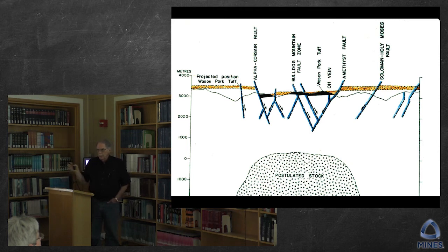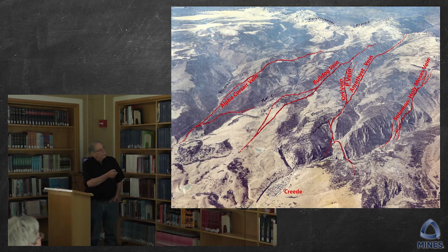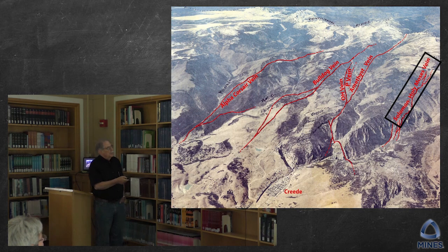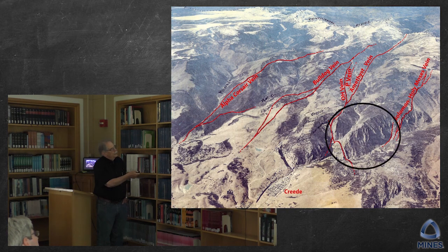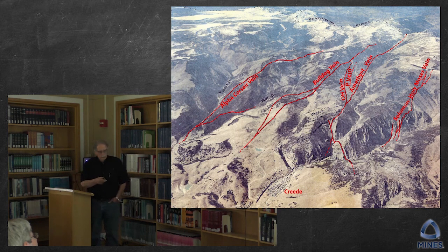With that introduction, I'm going to pretty much walk away from the geology, other than to point out in this oblique aerial photo, all of this has been outlined. Here is the Amethyst vein system, the OH and the P, the Bulldog, the Alpha Corsair, and the Solomon Holy Moses. Topographically, what we're really concerned with is this area right in here. This is Willow Creek draining down from the mountains, and at this point it splits — West Willow and East Willow — and those are the areas where most of the important mining occurred.